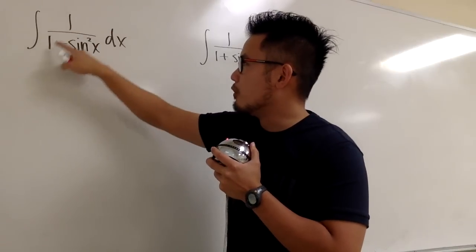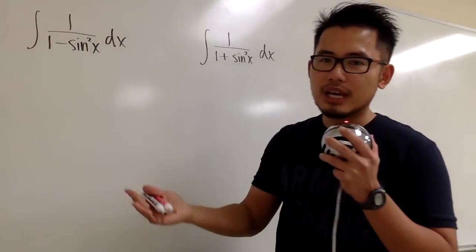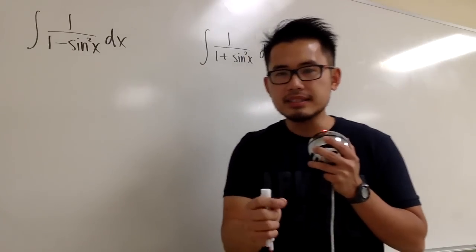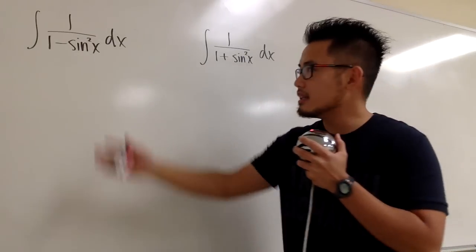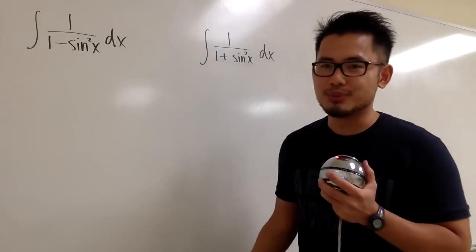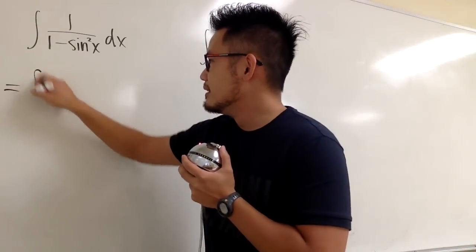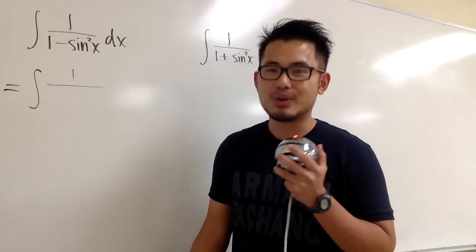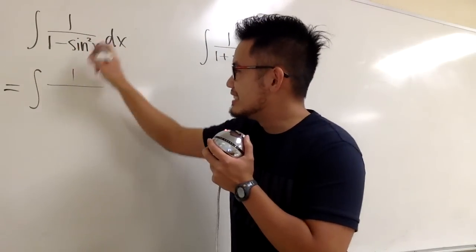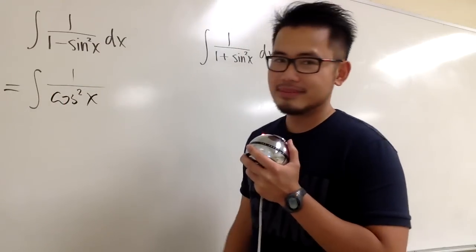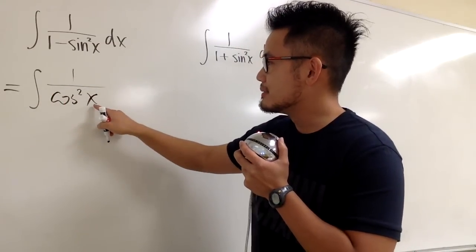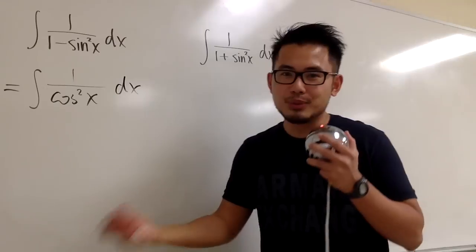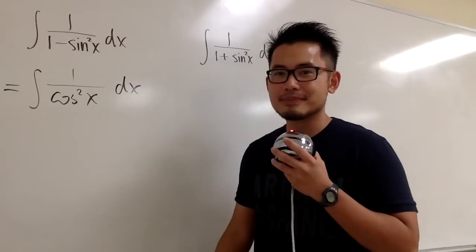So this is the integral of 1 over 1 minus sine squared x. Maybe some of you tried to factor this out, because this is the same as (1 + sin x)(1 - sin x). That is correct, but unfortunately that does not really help. The key is that 1 minus sine squared x is the same as cosine squared x, because sine squared x plus cosine squared x equals 1.